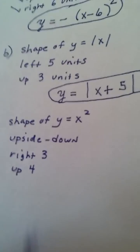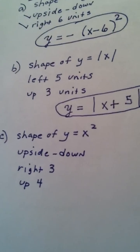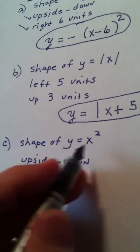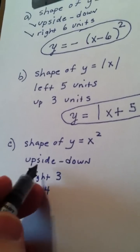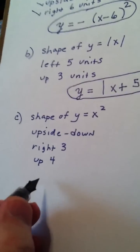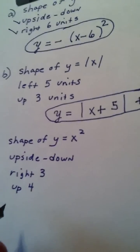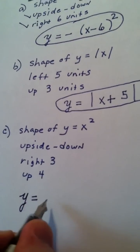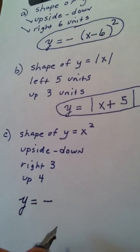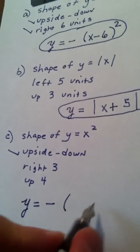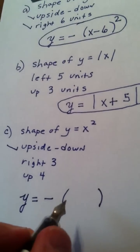And my last example, which is very similar to what we've done in the first two. It has the shape of y equals x squared, upside down, right three, and up four. So my answer is going to be y equals, upside down means it starts with a minus, right three. Here I have to put the parens. The absolute value bars acted as my grouping symbols before, but with a parabola, I don't have them, so I have to put them.